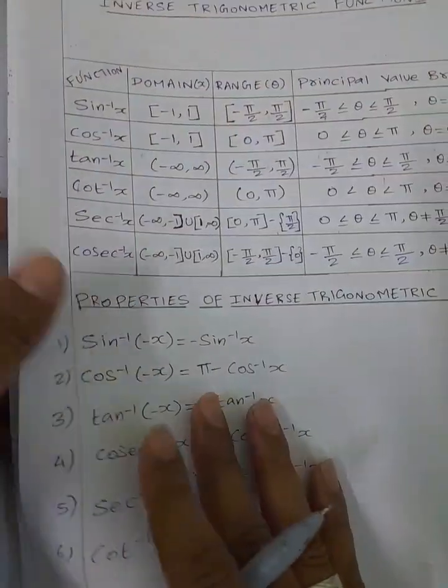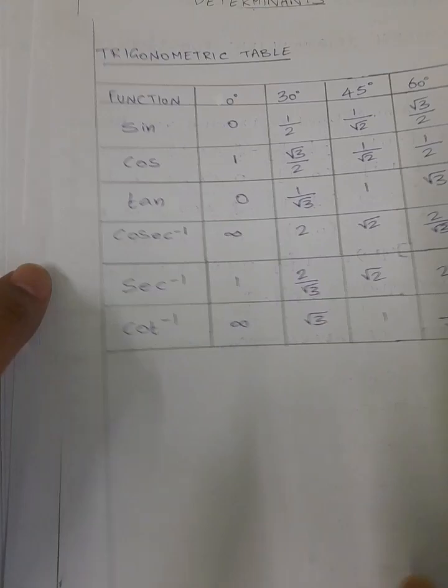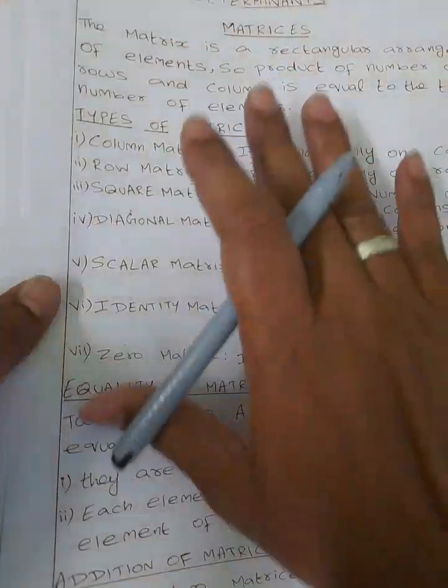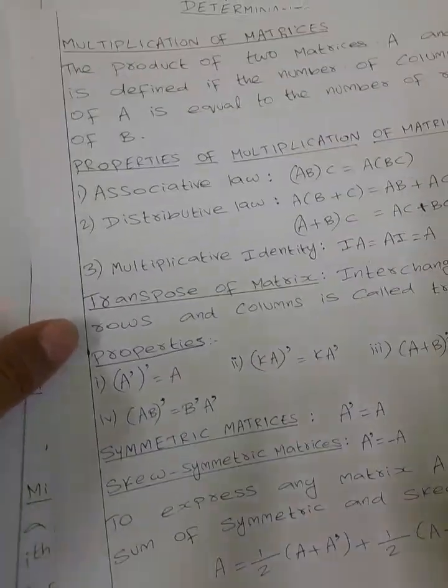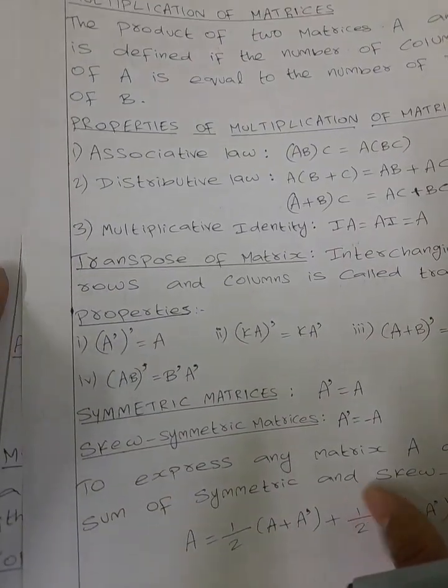This is the second unit — in the table, properties of the inversely trigonometric table. In the third unit, there is a matrix: Addition, Multiplication, Symmetric.